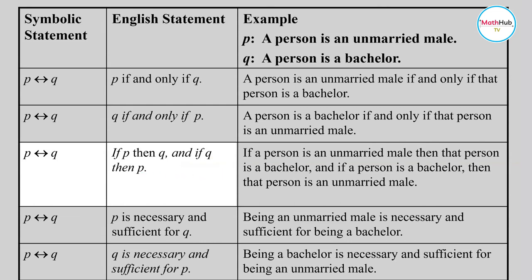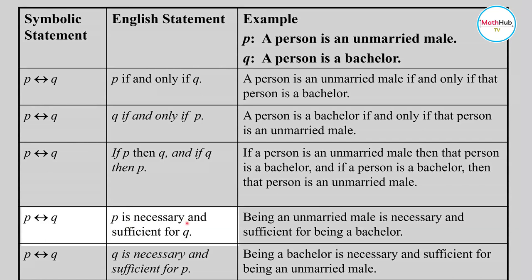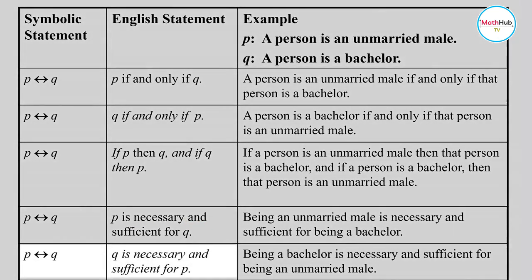Writing 'if p then q' and 'if q then p' together also expresses a biconditional — both sides are equivalent. You can also express this as 'p is necessary and sufficient for q,' or equivalently, 'q is necessary and sufficient for p.'